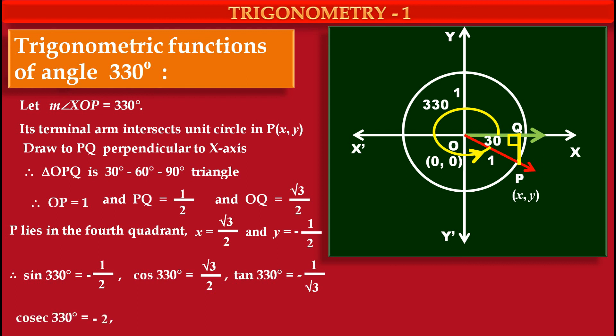Now cosec 330 is the reciprocal of sin 330, and so its value is minus 2. Sec 330 is the reciprocal of cos 330, so its value is 2 upon root 3. And cot 330 is the reciprocal of tan 330, so its value is minus root 3.